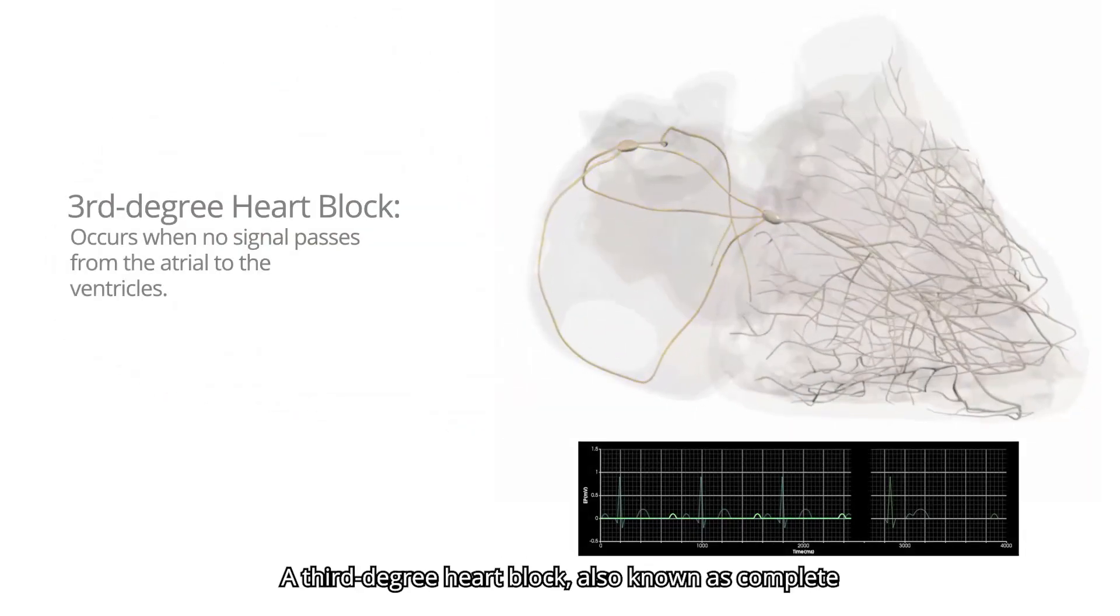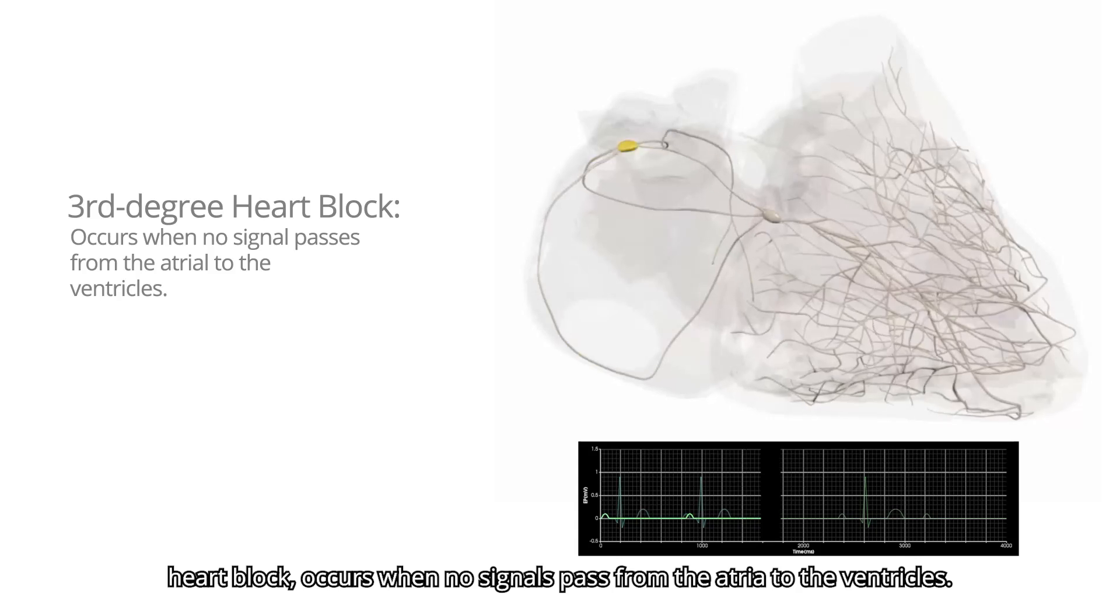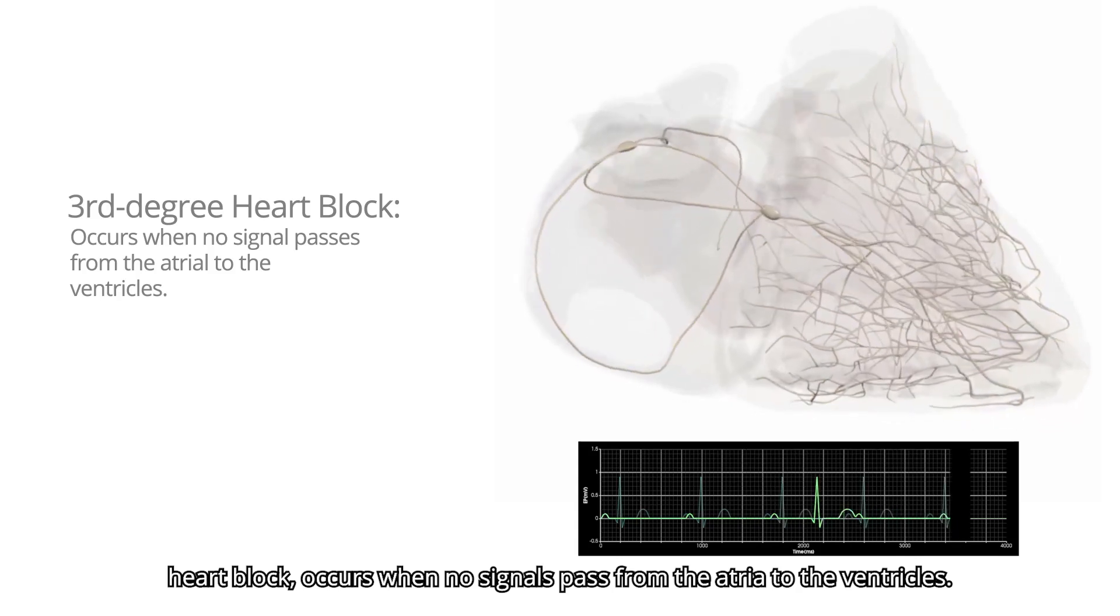A third-degree heart block, also known as complete heart block, occurs when no signals pass from the atria to the ventricles.